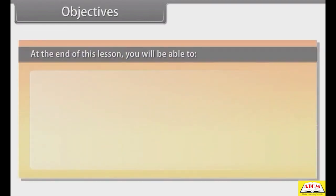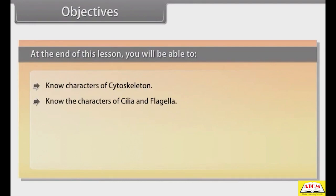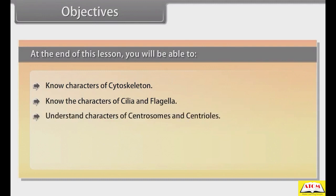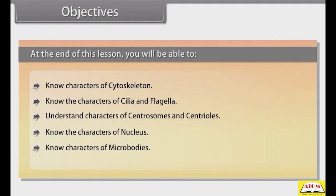At the end of this lesson, you will be able to: know the characters of cytoskeleton, know the characters of cilia and flagella, understand characters of centrosomes and centrioles, know the characters of nucleus, and know the characters of microbodies.